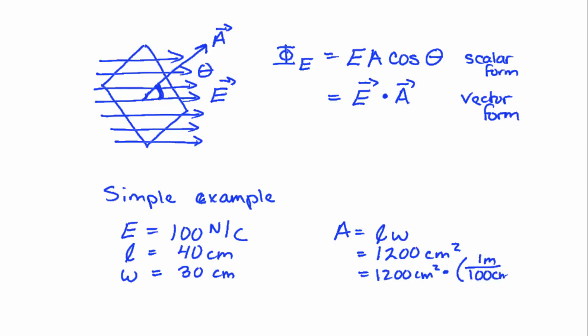So now my centimeters squared cancel, and I'll be left with meters squared. So that is 0.12 meters squared. Don't forget to actually square the 100 that's in the denominator inside that parentheses. It's an easy mistake to make.